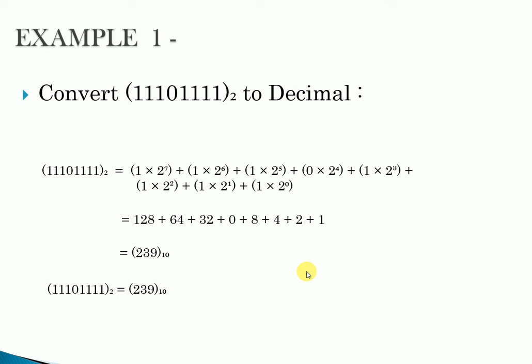Now we will see the example. Example 1: Convert 11101111 to decimal number. In this solution, we multiply each digit by 2: 1 multiply by 2, 1 multiply by 2, 1 multiply by 2, 0 multiply by 2, 1 multiply by 2, 1 multiply by 2, 1 multiply by 2, and 1 multiply by 2.